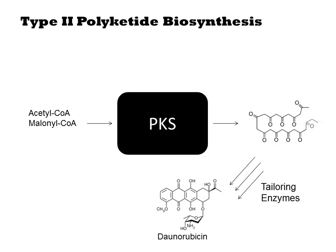Type 2 polyketides behave much like the simple fatty acid synthase system. Nothing special happens coincident with polymerization of the polyketide. An acetyl CoA and many malonyl CoA molecules go in, and a simple polymer comes out that contains many ketones as a soluble intermediate.